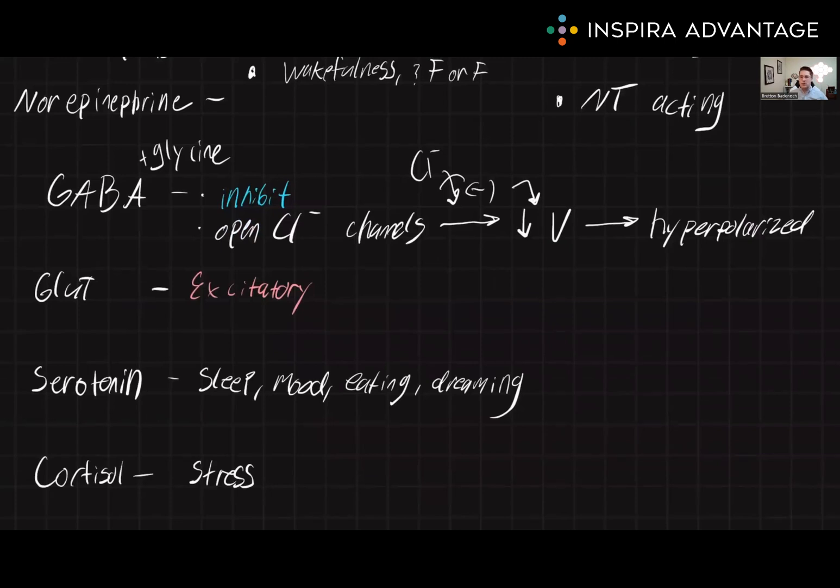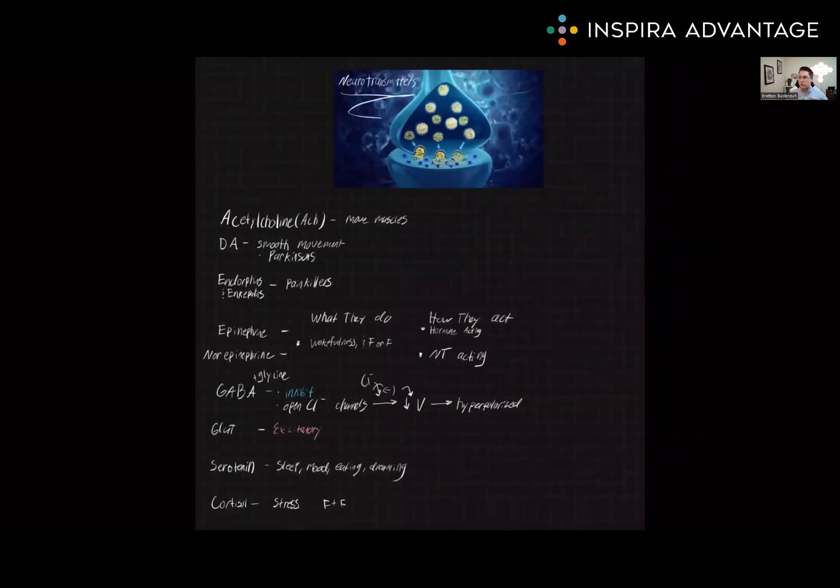And finally, I just want to talk about cortisol. So cortisol is a stress hormone released by the adrenal cortex. So not quite a neurotransmitter. However, it does act on the brain. And all you need to know about cortisol is it's promoting stress and also causing that fight or flight response to become active.